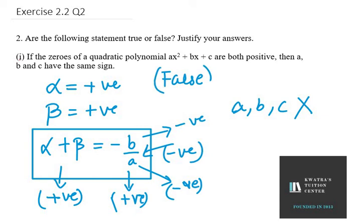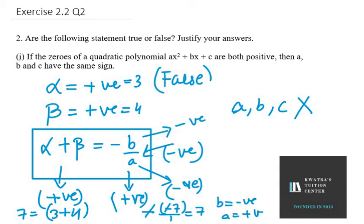But I can take one example here. Suppose we have alpha plus beta as 3 plus 4. So if we have 3 plus 4, the left hand side will be 7, a positive term. Now if suppose we have B as minus 7 and A as 1, so minus minus 7 over 1 equals 7. From this it is very clear that B must be negative and A must be positive for this condition. They can't have same sign, you can see here that they don't have same sign.